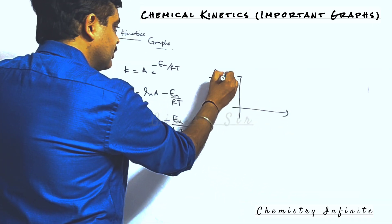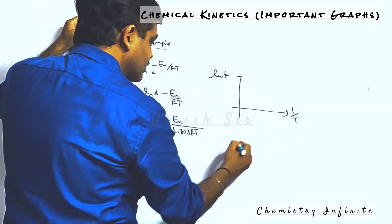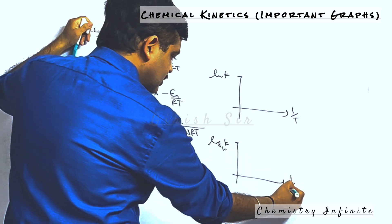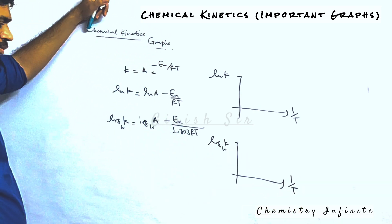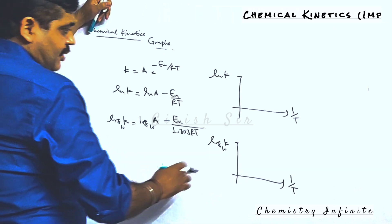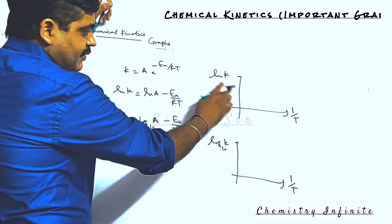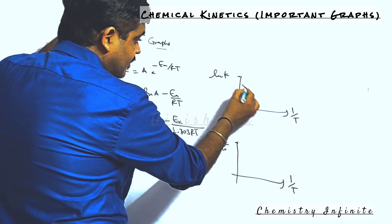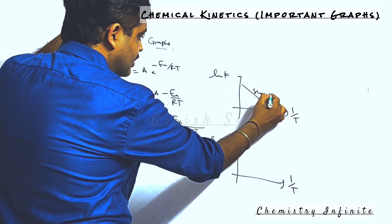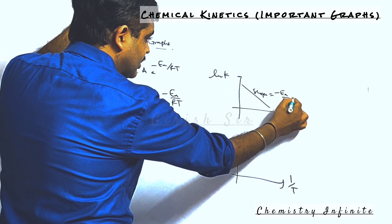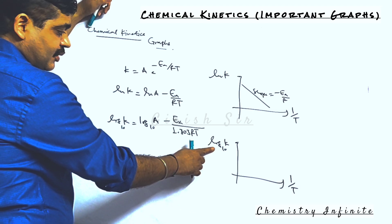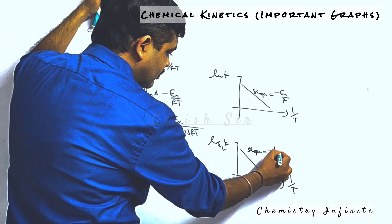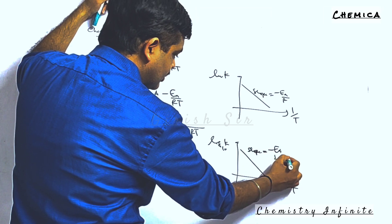Next are graphs based on the Arrhenius equation. The first one: ln k versus 1/T is a linear graph whose slope is negative, equal to minus Ea divided by R. The next one: log k with base 10 is also linear, but the slope is different — equal to minus Ea divided by 2.303R.